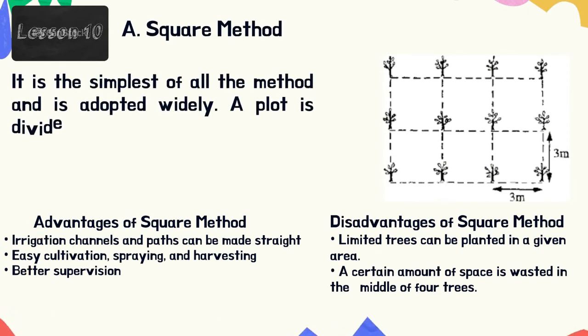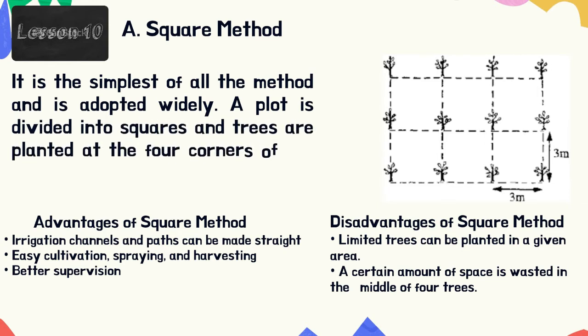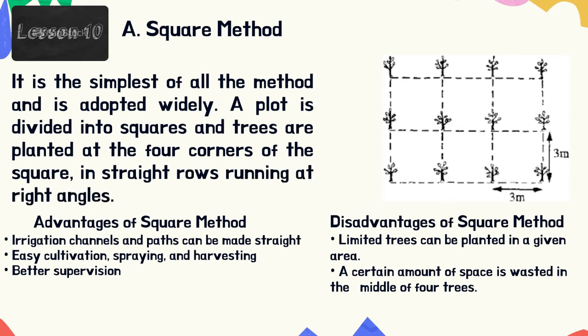Square method: it is the simplest of all methods and is adapted widely. A plot is divided into squares and trees are planted at the four corners of the square in straight rows running at right angles. Advantages: irrigation channels and paths can be made straight, easy cultivation, spraying and harvesting, and better supervision. Disadvantages: limited trees can be planted in a given area, and a certain amount of space is wasted in the middle of four trees.